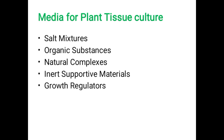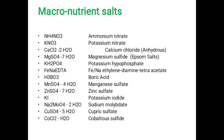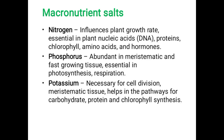The composition of media for plant tissue culture includes: salt mixture, organic substances, natural complexes, inert supportive materials, and growth regulators. Micronutrient salts include ammonium nitrate, potassium nitrate, calcium chloride, magnesium sulfate, potassium dihydrogen phosphate, ferric and sodium EDTA, boric acid, zinc sulfate, potassium iodide, sodium molybdate, cupric sulfate, and cobalt sulfate.